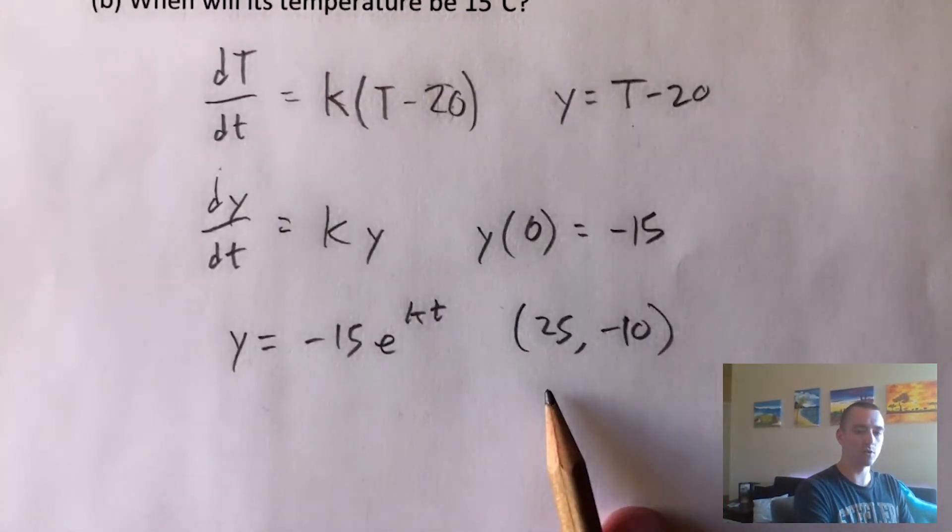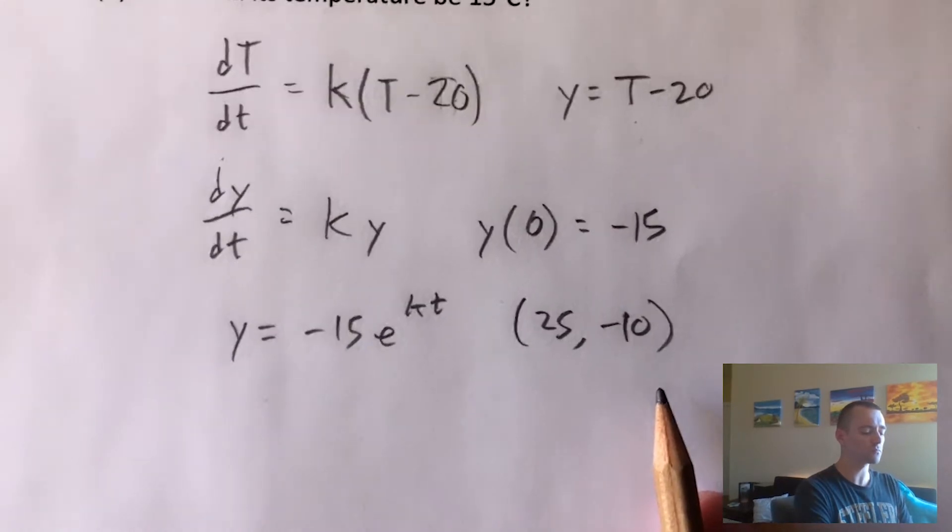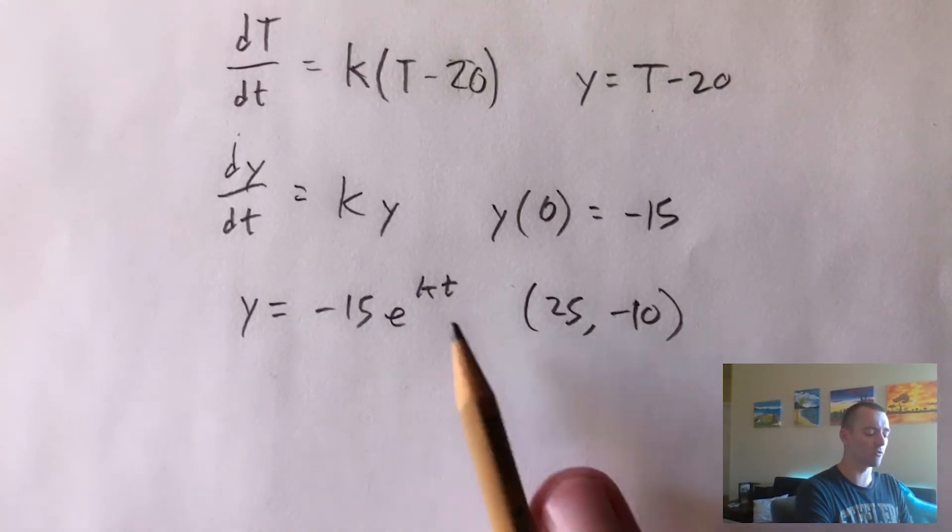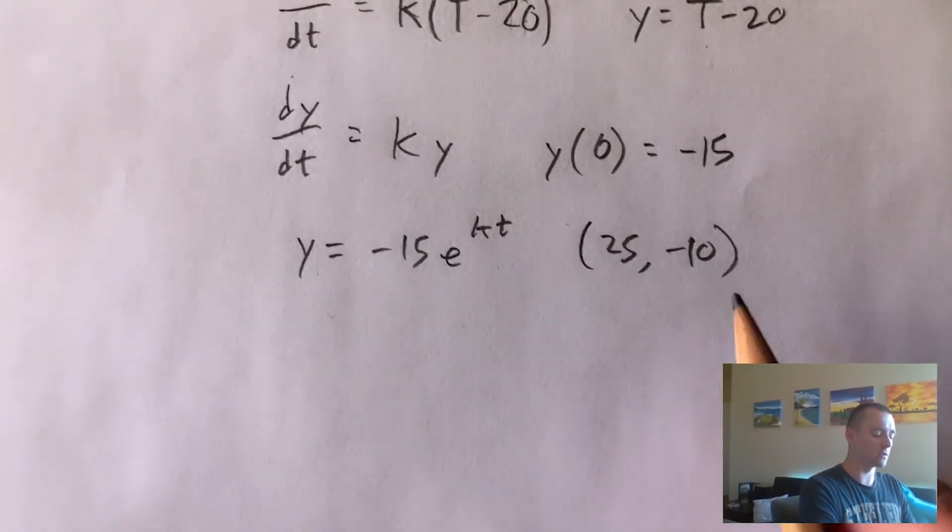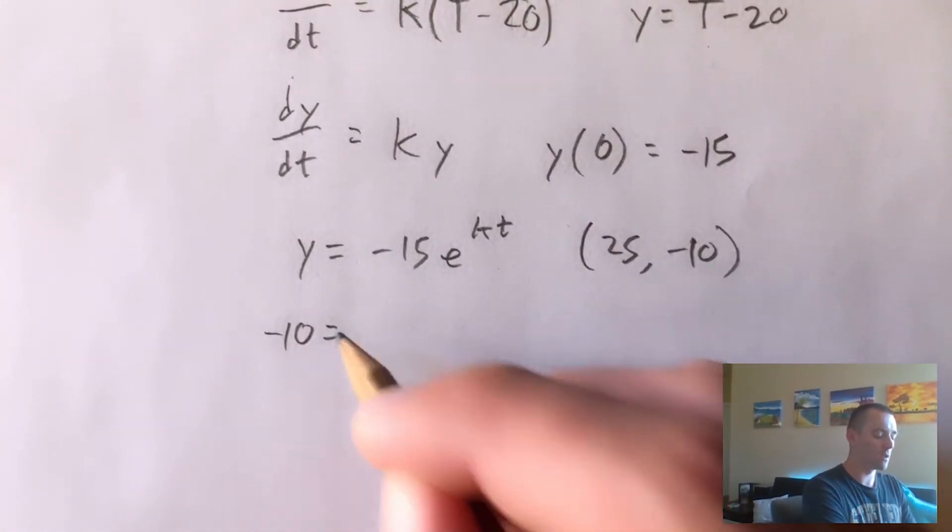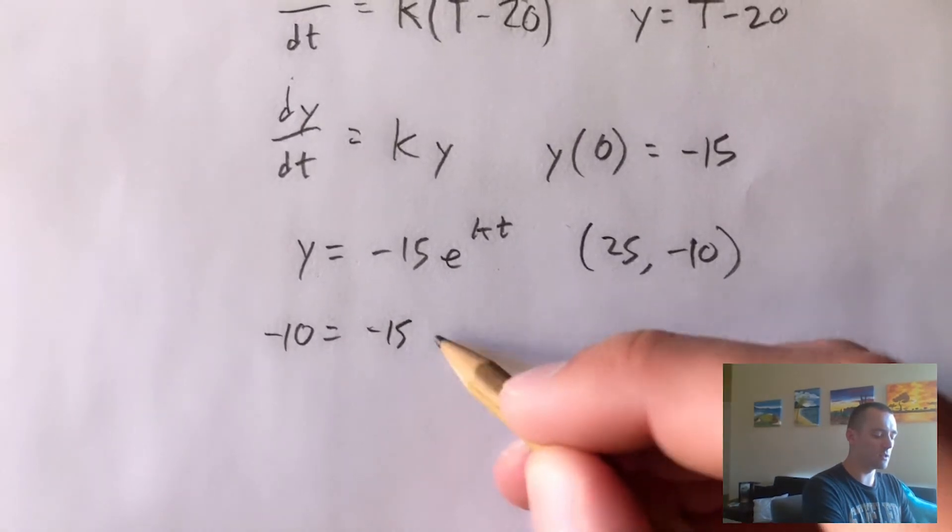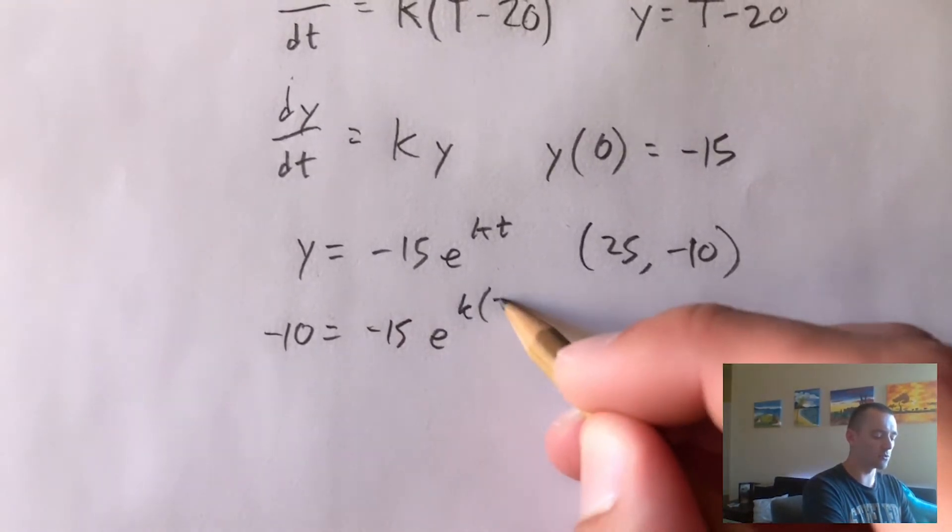So when t is 25, y is negative 10. What we can do now is plug in 25 for t, negative 10 for y, and solve for k. So doing that is going to give us negative 10 equals negative 15 times e to the k times 25.